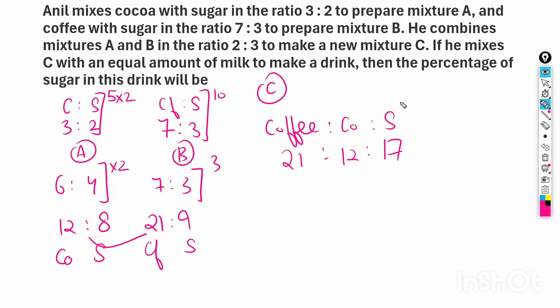How much is the total? 12, 8, 21, 9—that's 50. So the total is 50, and he added 50 of milk. The percentage of sugar in this drink would be...